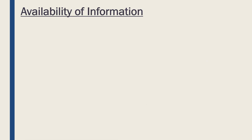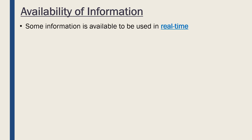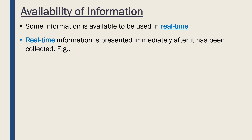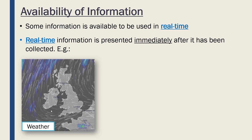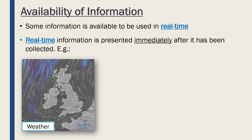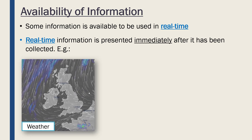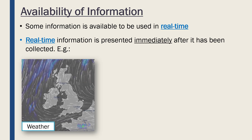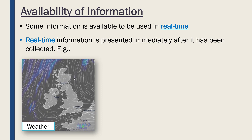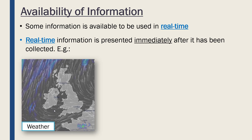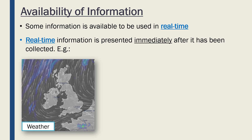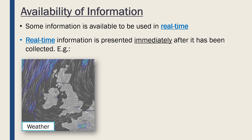Another factor relevant to presenting information is how available your information is. Some information is available to be used pretty much in real time, meaning at the moment it's occurring — the information is presented pretty much immediately after it has been collected. So we collect some data, we process it to make it information, and with real-time information that is then presented straight away after it has been processed. Weather is a good example — a live forecast collects data via sensors across the country to see what the wind speed is, whether it's raining, and so on. This is processed and then released on a live weather map, so the information is real time.